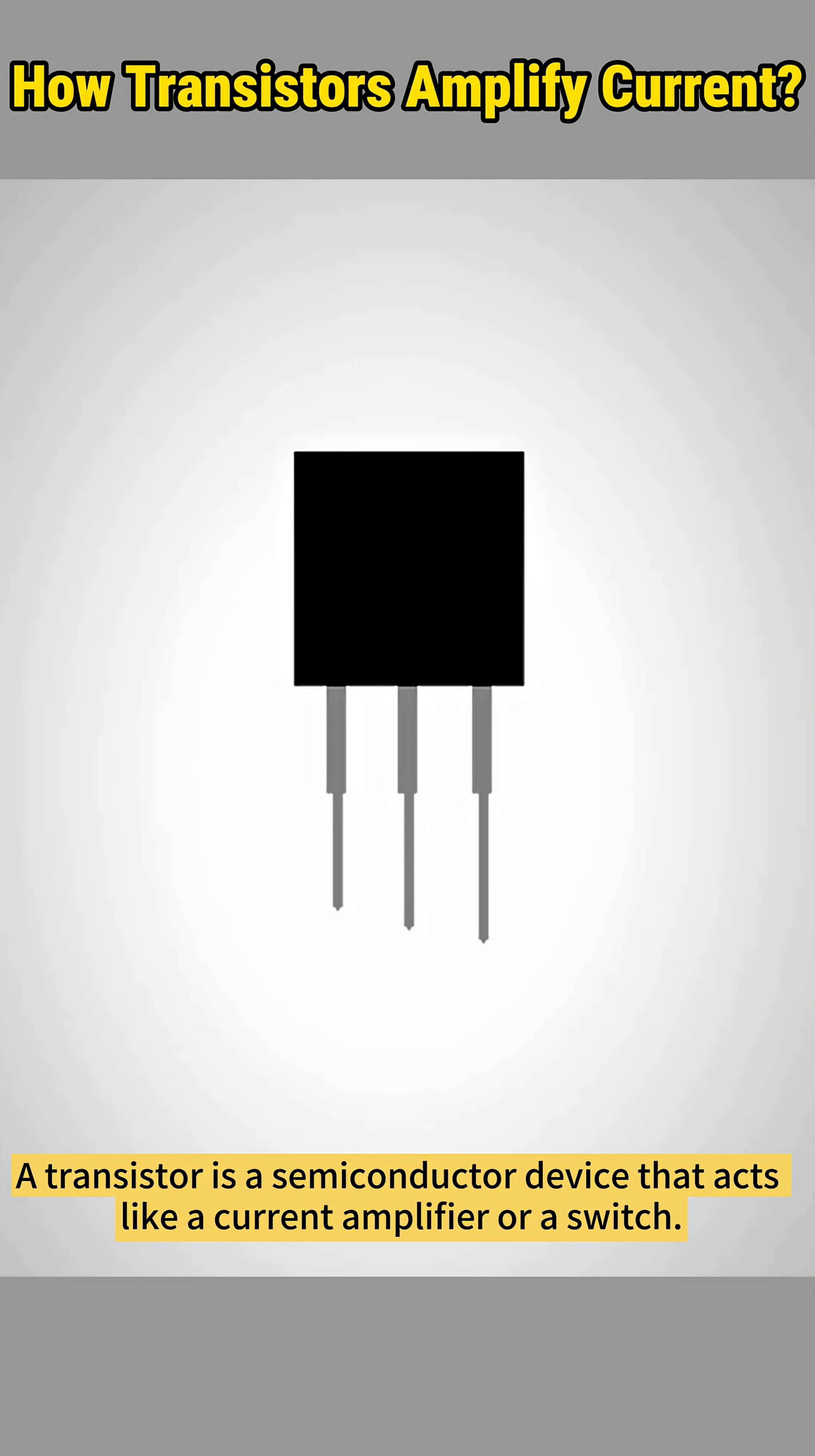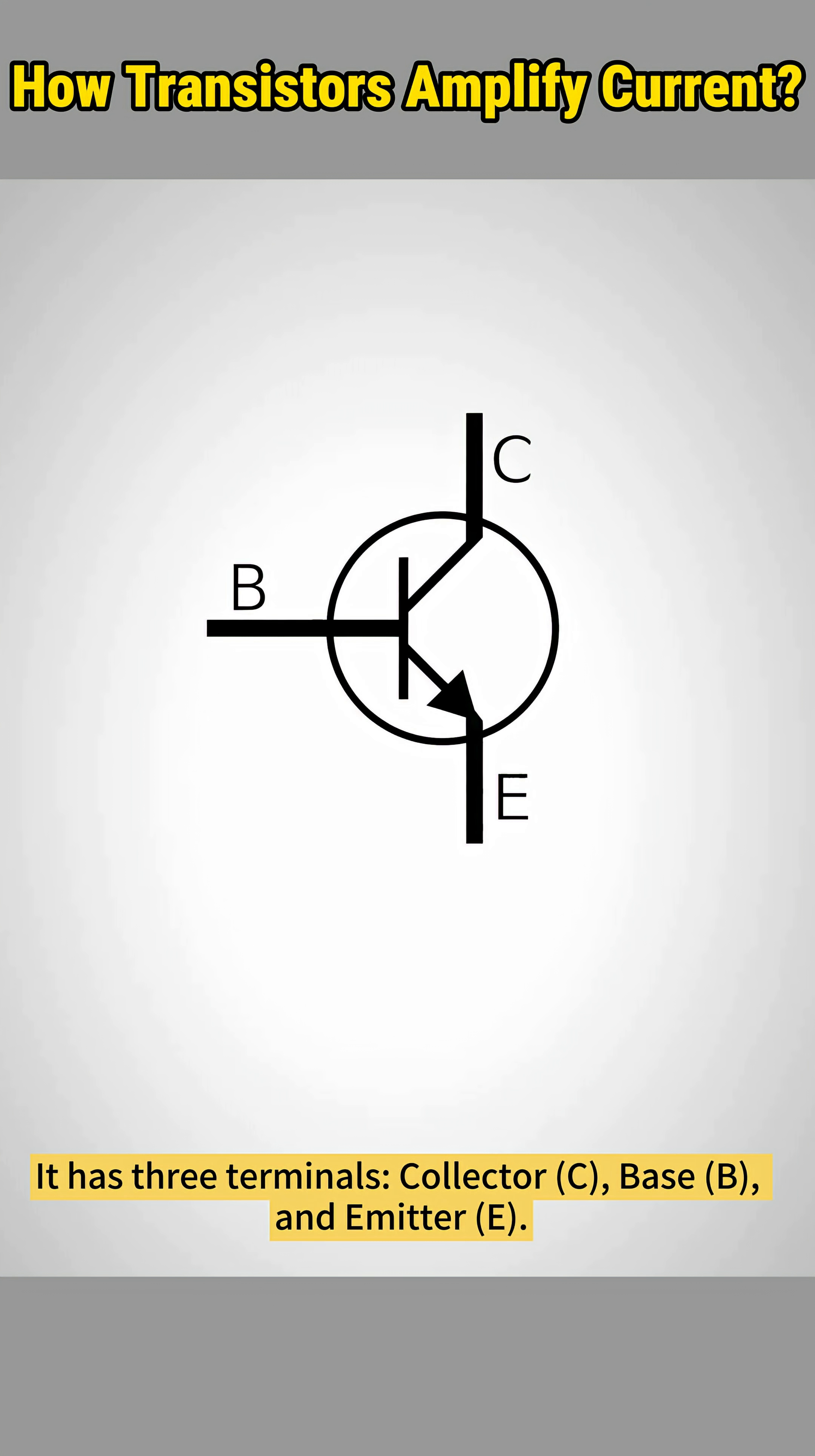A transistor is a semiconductor device that acts like a current amplifier or a switch. It has three terminals: collector, base, and emitter.